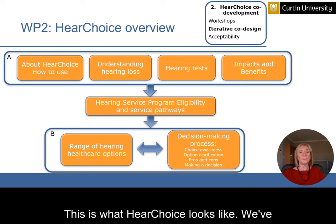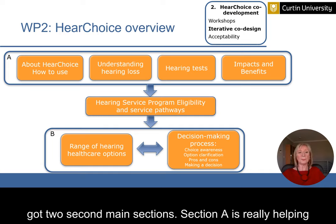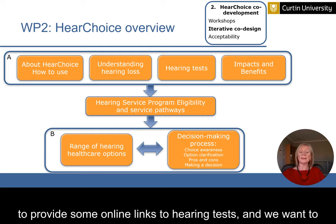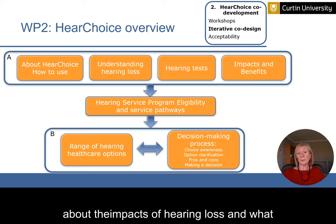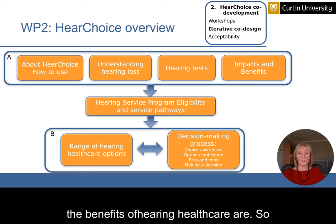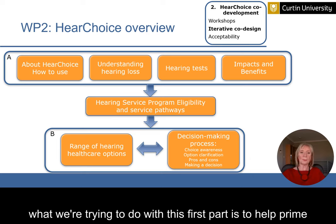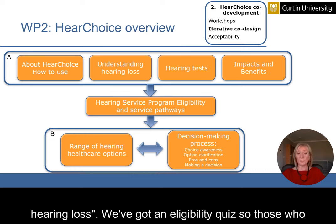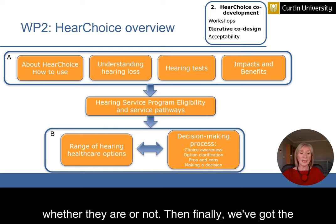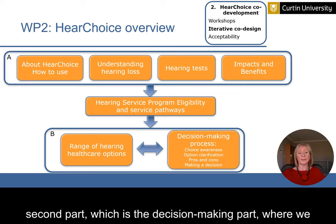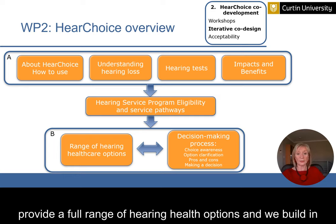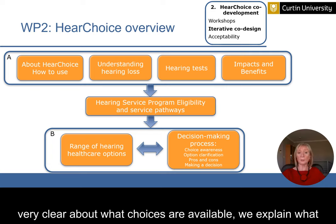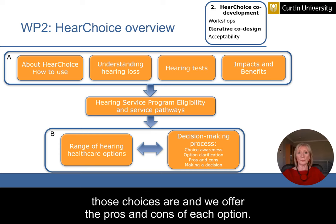This is what HearChoice looks like. We have two main sections. Section A helps people understand more about their hearing loss — providing links to online hearing tests, explaining the impacts of hearing loss, and the benefits of hearing health care, to help people reach 'I must do something about my hearing loss.' There's also an eligibility quiz so people know whether they qualify for the Hearing Services Program. The second part is the decision-making section, which provides a full range of hearing health options and explains pros and cons of each.